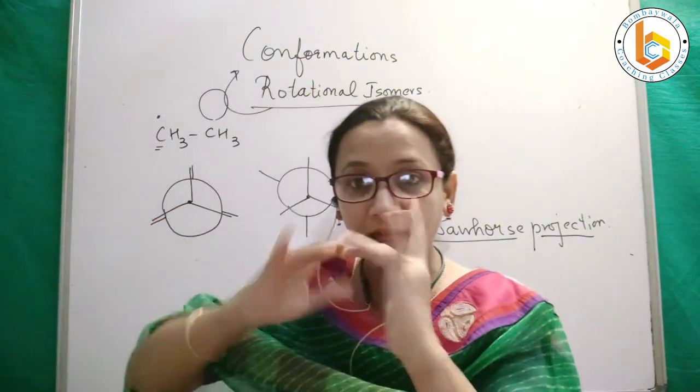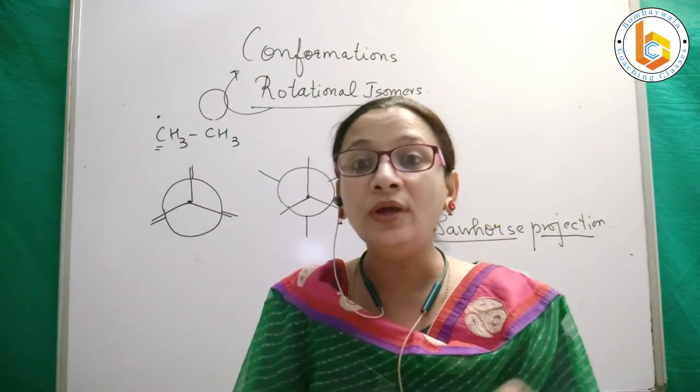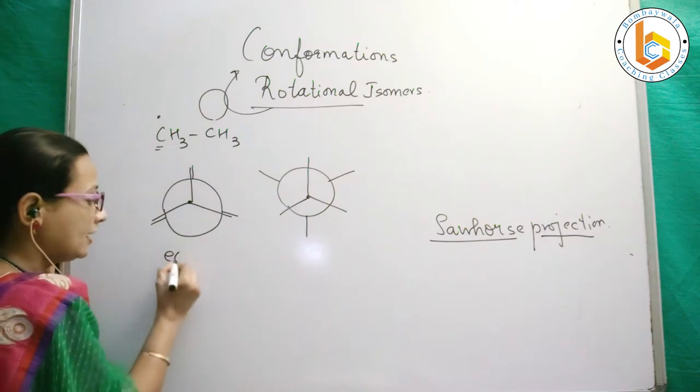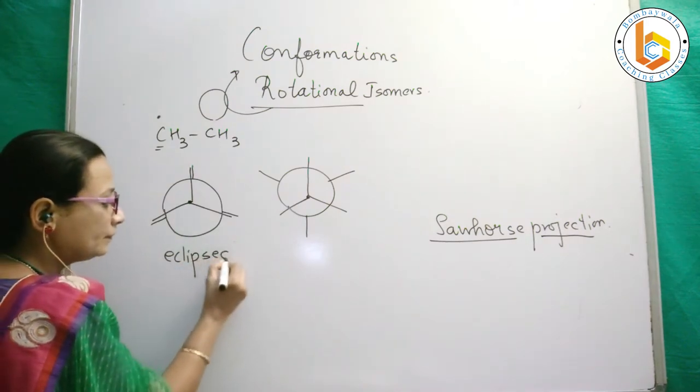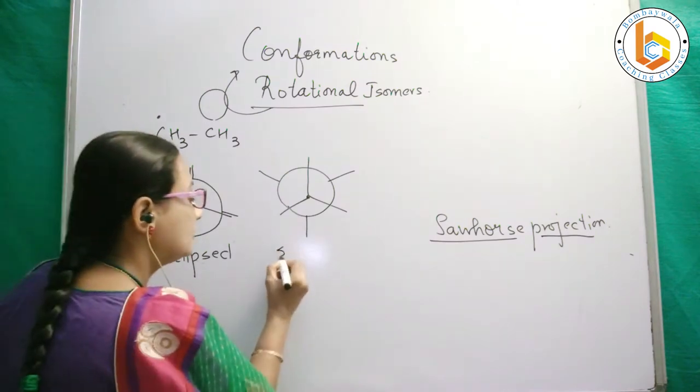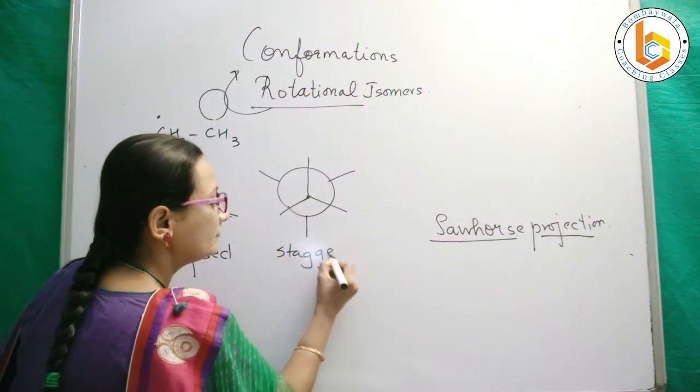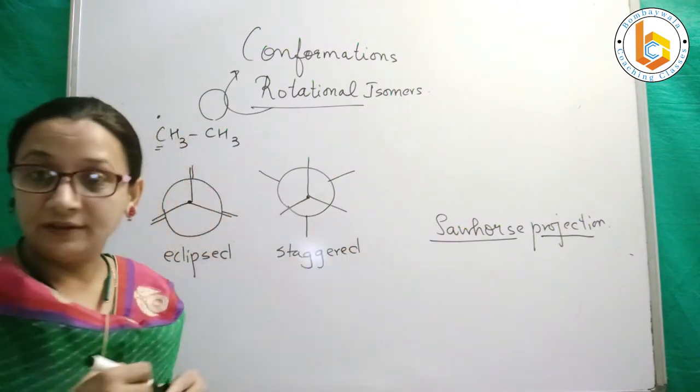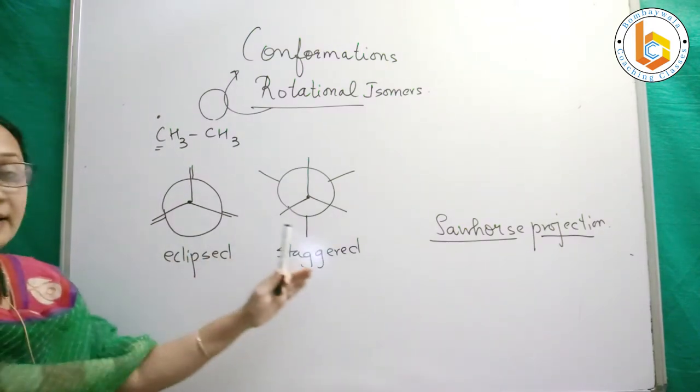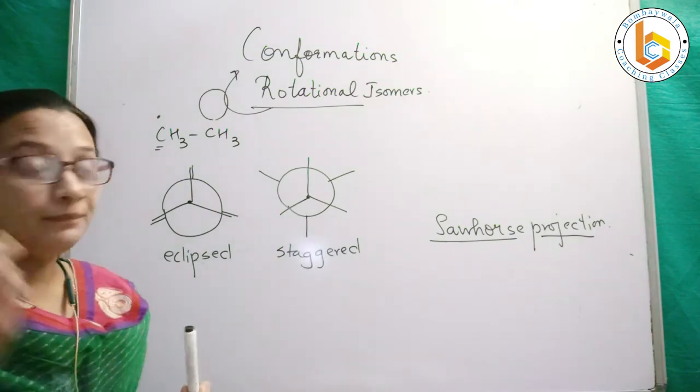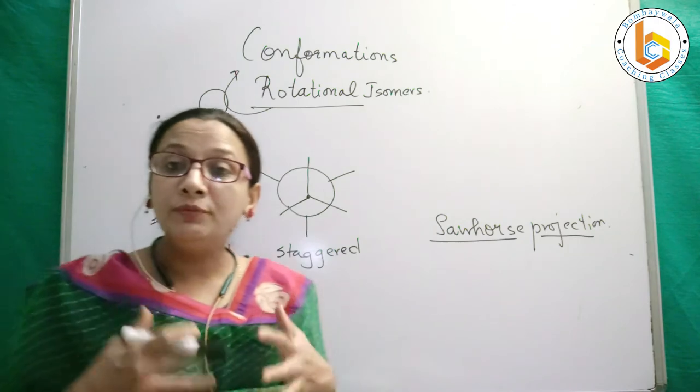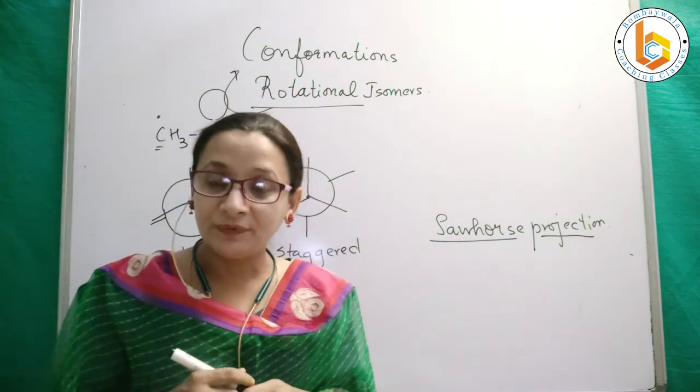This is how we can represent ethane as eclipsed form and as staggered form. This is how Newman told us to write the conformation. Now let us learn and understand what scientist sawhorse told us.